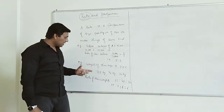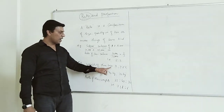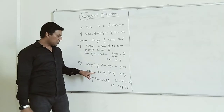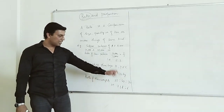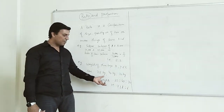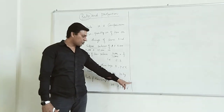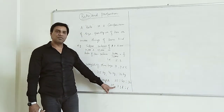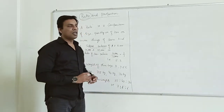Take another example. Suppose weight of 3 boys X, Y and Z. Suppose their weights are 35 kilogram, 40 kilogram and 30 kilogram. So ratio of their weights is 35 ratio 40 ratio 30, and this is the simplified form of this ratio. So this is called ratio.